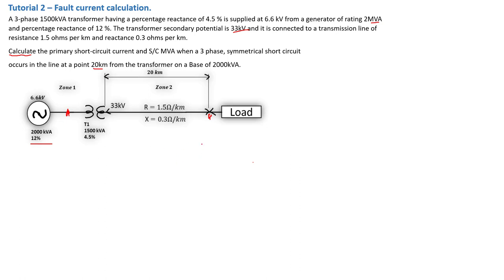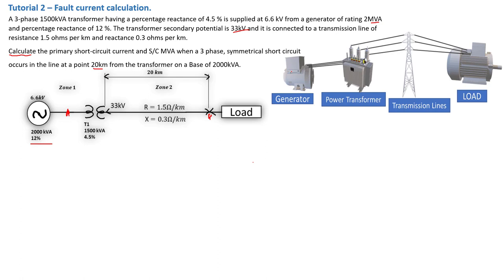We can also show an elevated real-life scenario illustration: a generator, a power transformer, and a transmission line supplying a load — for example, a motor. The fault is at 20 kilometers from the transformer, somewhere along the transmission line, perhaps between pylons. If there is a fault there, the motor will be deprived of receiving power.